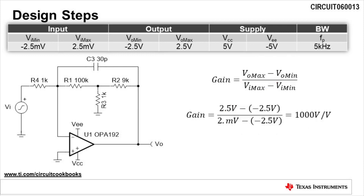The first design step is to calculate the gain of the input signal. The gain of the input signal is calculated by dividing the output voltage swing Vo max minus Vo min by the input voltage swing Vi max minus Vi min. The required gain of the input signal is 1000 volts per volt.